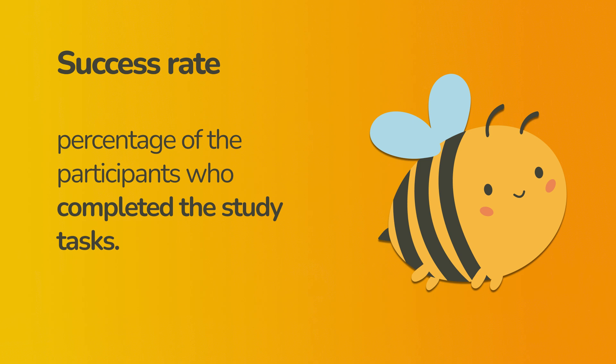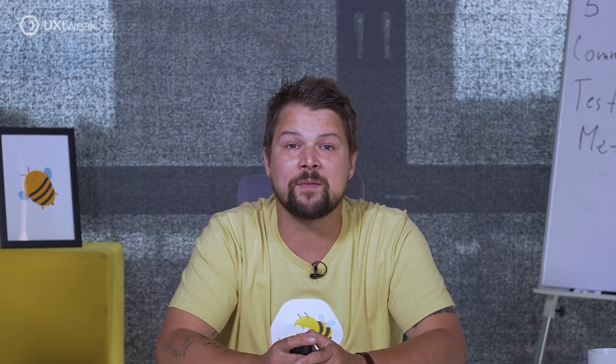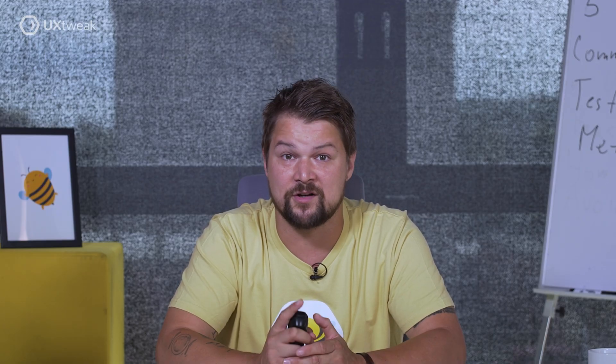The success rate is the percentage of participants who completed the study tasks. A study task may be to find a specific item on the website. If 9 out of 10 users were successful, you have a 90% success rate. This signifies that most users don't face major usability issues on their user journey. It also means that 10% of users were not successful, and if the study is completed with real users, such a percentage can be significant — so it's important to understand where the problem occurred.